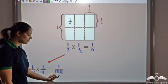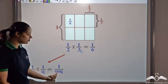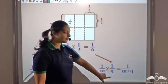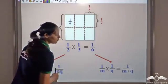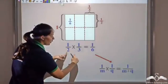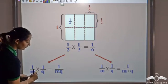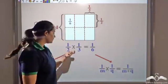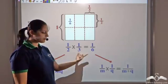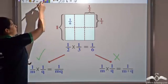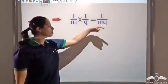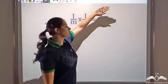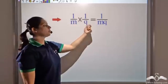There were two possibilities: either 1 by m into 1 by q gives 1 by mq (denominators multiplied), or 1 by m plus q (denominators added). What I can see is that the denominators are being multiplied, so 1 by m into 1 by q gives 1 by mq. If they were added, 1 by 2 into 1 by 3 should give 1 by 5, which is not the case. So whenever I multiply two unit fractions, the denominators get multiplied and the numerators — both being 1 — also get multiplied, remaining 1.